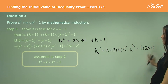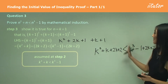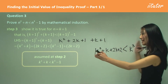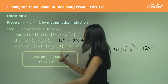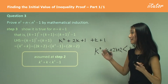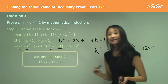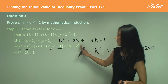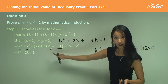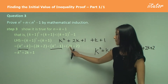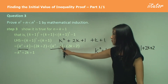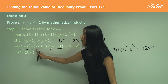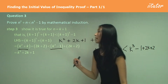So therefore we can say that k squared plus k plus 2k plus 2 is less than k cubed minus 1 plus 2k plus 2. Using our assumption, we now work with the right-hand side: k cubed plus 2k minus 1 plus 2 gives us k cubed plus 2k plus 1.